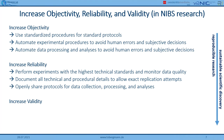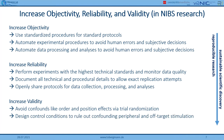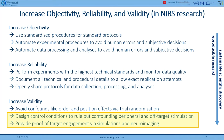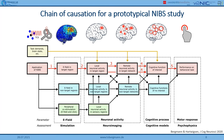To increase validity, it helps to avoid confounds like order position effects through trial randomization, design control conditions to rule out confounding peripheral and off-target stimulation, and provide proof of target engagement — which serves as a classical manipulation check for stimulation and imaging studies. The latter two are not just addressable by technical implementations; we need to go into experimental design and make sure that the entire chain of causation from the application of non-invasive brain stimulation to the actual measurement of the dependent variable is complete, with no confounding factors explaining the results instead.